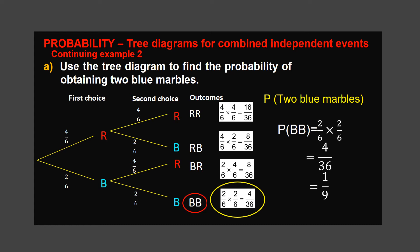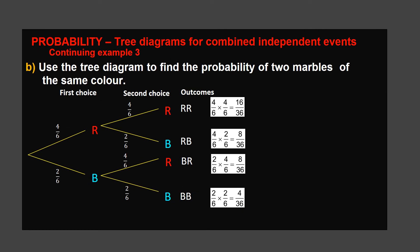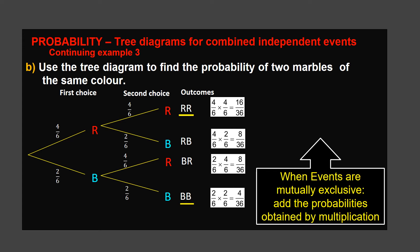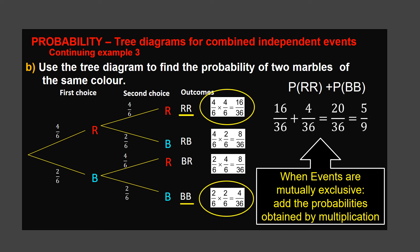B: Find the probability of two marbles of the same color. There are two possible outcomes that give two marbles of the same color — red and red, or blue and blue. This is a mutually exclusive event. When events are mutually exclusive, add the probabilities obtained by multiplication. Calculate the probability of each combination by multiplying along the branches, then add the two probabilities. The answer is 5 over 9.